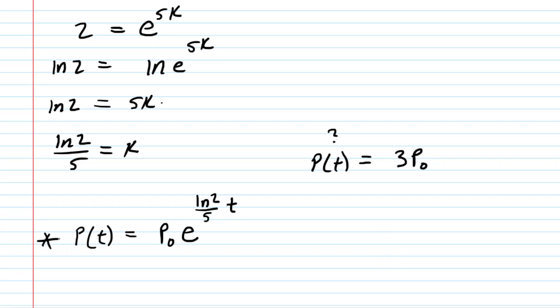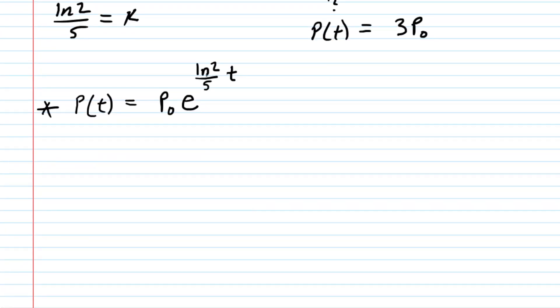So going back to our solution to our differential equation, we've plugged the value of k in right there, and for this P(t), we shall plug in three times the initial population. Now you're already starting to see what's happening here. You've got the P₀ on both sides of the equation, so you would divide both sides to cancel it out.